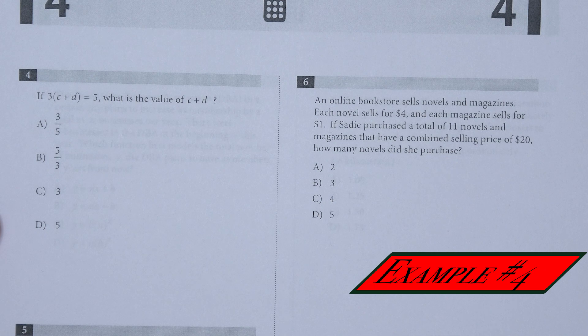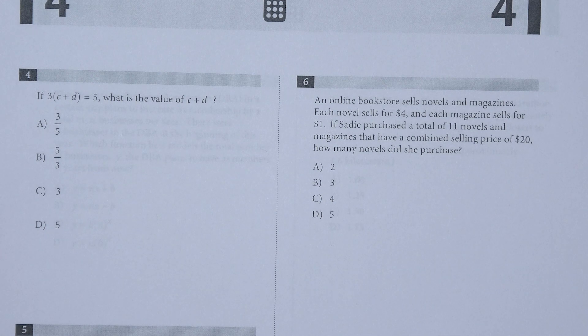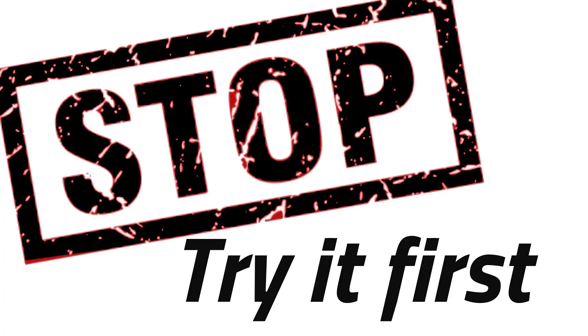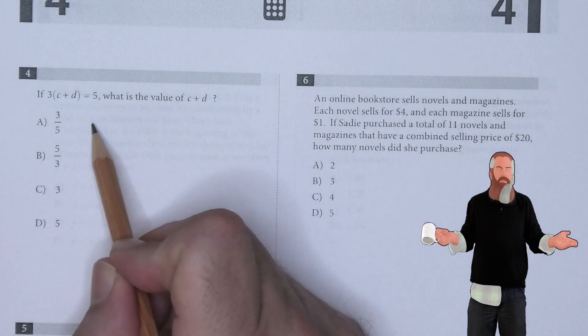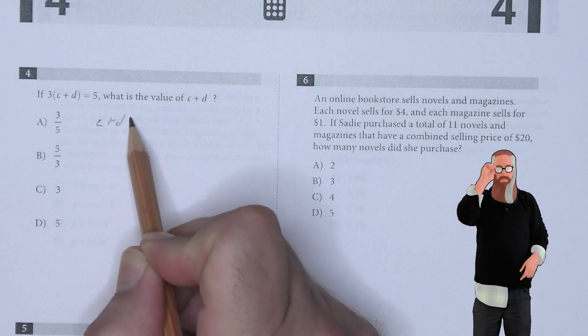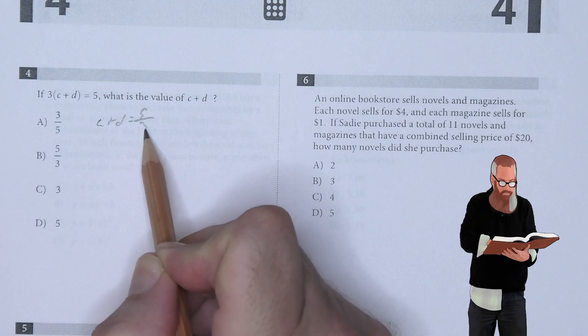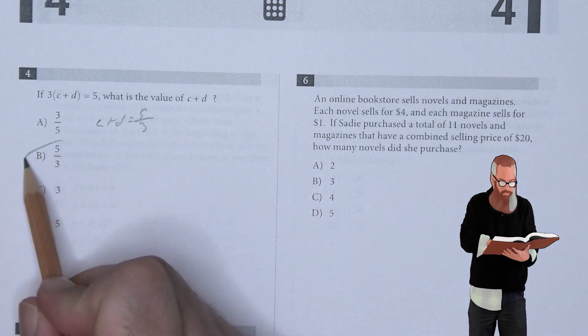If 3 times the sum of C and D is equal to 5, what is the value of C plus D? It's fairly obvious that C plus D would be equal to 5 divided by 3, so B is the answer.